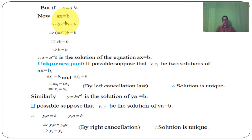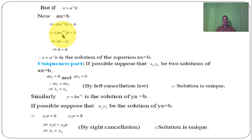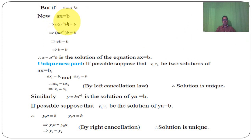Now, substituting back into AX equal to B, the solution is X equal to A inverse into B. So X equal to A inverse B is the solution of this equation. This solution exists.